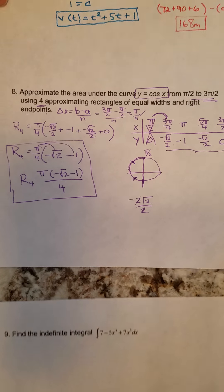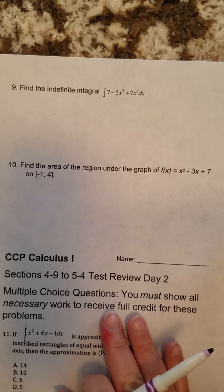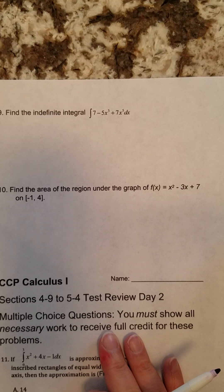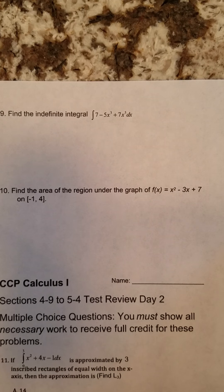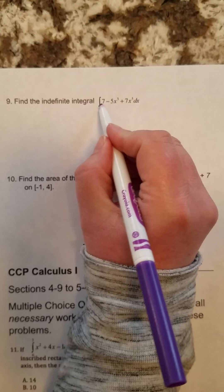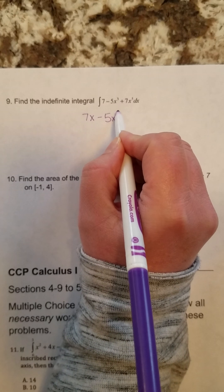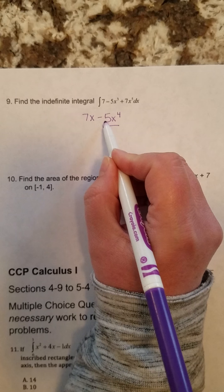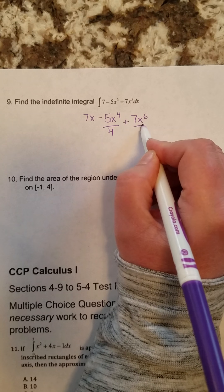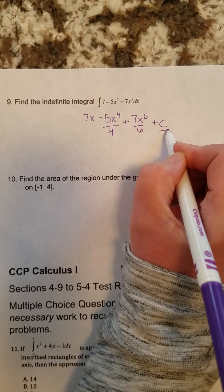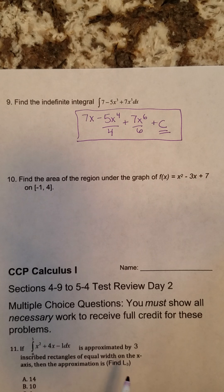That is question number 8. Next, we move on to question number 9. It says, find the indefinite integral 7 plus 5x cubed plus 7x to the 5th dx. And this one should be pretty easy for you at this point. Adding 1 to the exponent, dividing by the new exponent. I think you can see my writing 7x minus 5x to the 4th over 4 plus 7x to the 6th over 6, and then just don't forget that plus C right there. And that is your answer. There's no other work required for that problem.